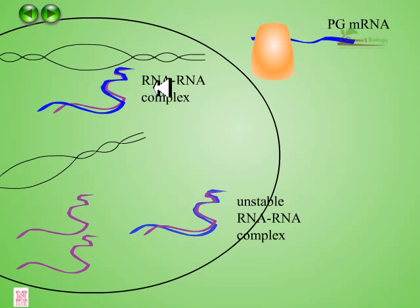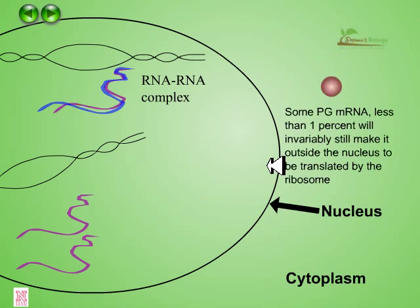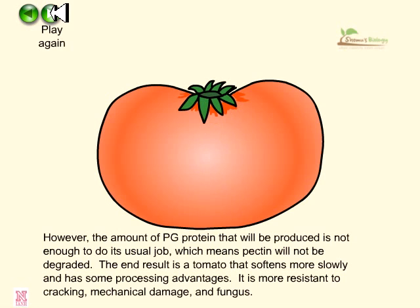Some of the RNA molecules are released and translated into PG proteins inside the cytosol, while others form the unstable RNA-RNA complex. Some PG mRNA — less than one percent — will still make it outside the nucleus to be translated by the ribosome.